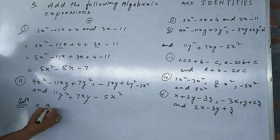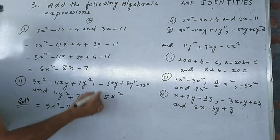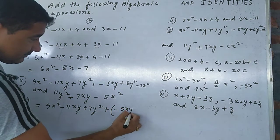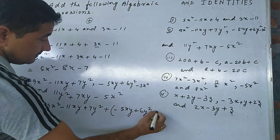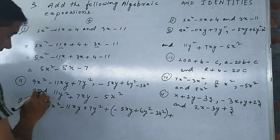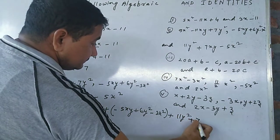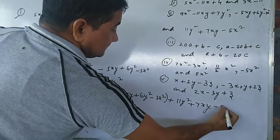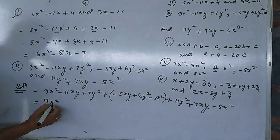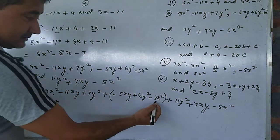Solution: 9x² minus 11xy plus 7y², in comma you can write plus here. You give a bracket, 5xy plus 6y² minus 3x², close the bracket and plus. Then 11y² plus 7xy minus 5x². Now you see the like terms.